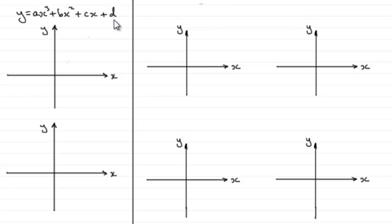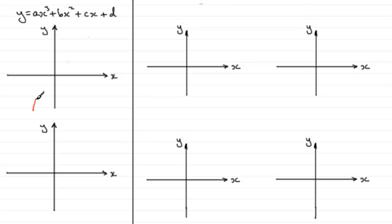One graph that should be familiar to you straight away is the graph of y equals x cubed — that is if we just make a equal to 1 and b, c, and d equal to 0. So y equals x cubed: it starts from down here, rises up to the origin, and when it gets to the origin it flattens off, and then it rises again.